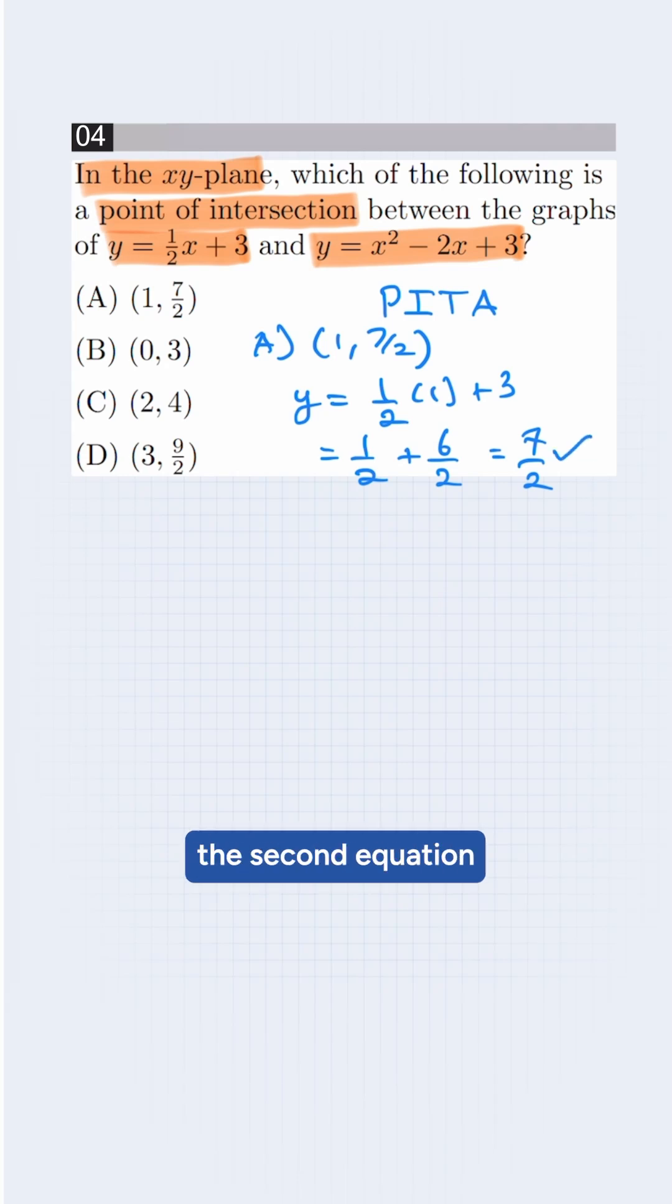Now, we test for the second equation, which is y equals 1 squared minus 2 into 1 plus 3. It will be 1 minus 2 plus 3, which is 2. This doesn't match with the y-point, so A is not our correct answer.